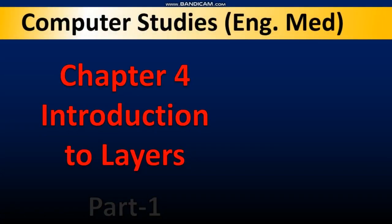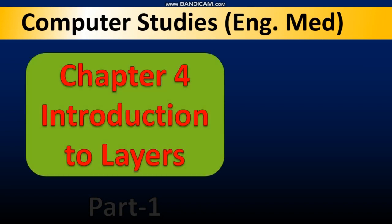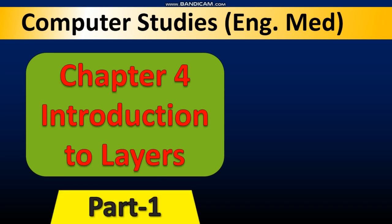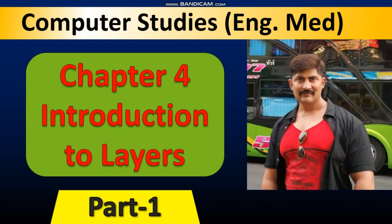Welcome dear students to computer studies English medium chapter number 4, that is introduction to layers. This is part 1. In the previous video you had learned that in Synfig you are able to create different shapes such as circle, star, and square. These all shapes used to form different layers on the canvas. On the right-hand side bottom panel, each shape forms an individual layer. In this chapter we are going to have detailed knowledge of these things.